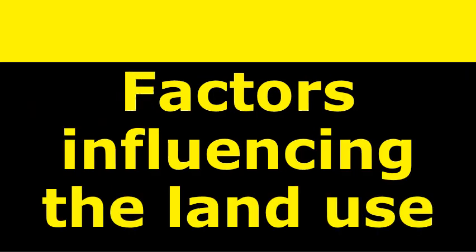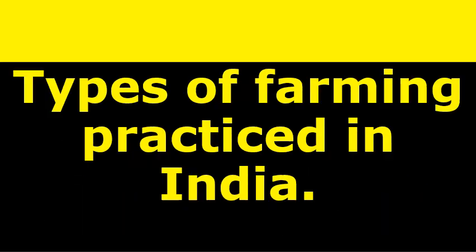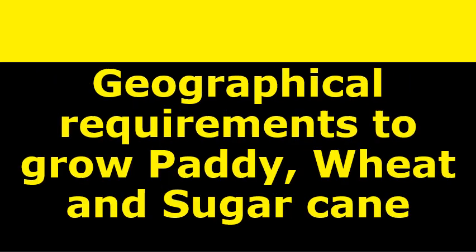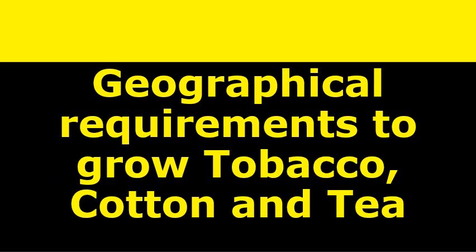Study the importance of agriculture, factors influencing land use, and types of farming practiced in India. Geographical requirements to grow paddy, wheat, sugarcane, tobacco, cotton, and tea — any two crops will be asked. You need to write the temperature, rainfall, soil, season, and the states where they are cultivated. You will get four out of four.